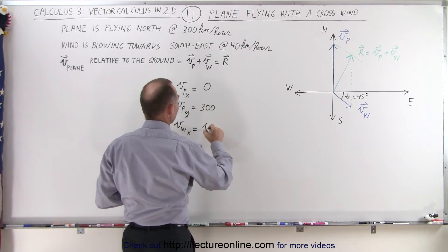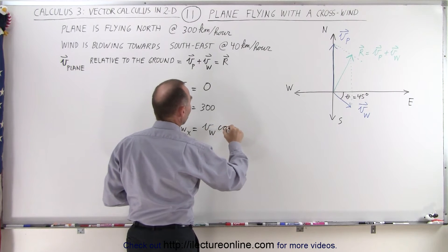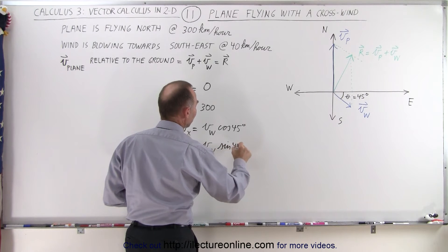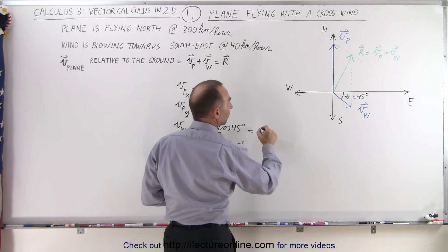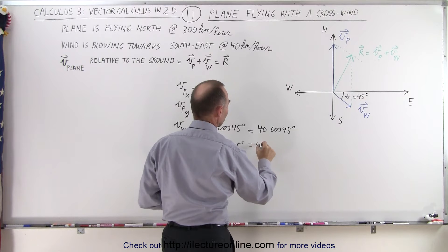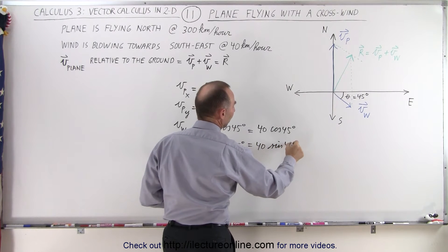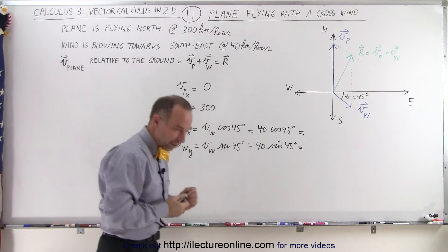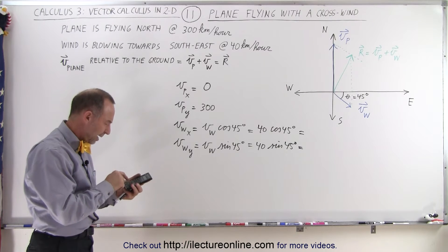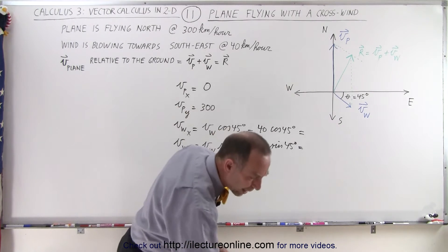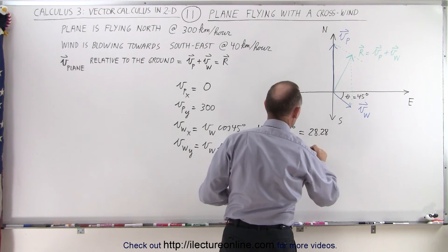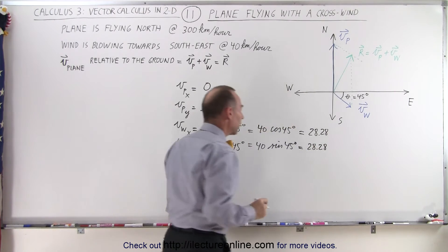For the wind's velocity components, we must account for the 45-degree angle. The x component is v-of-the-wind times cosine of 45 degrees, and the y component is v-of-the-wind times sine of 45 degrees. So this becomes 40 times cosine of 45 degrees and 40 times sine of 45 degrees, which both equal 28.28 kilometers per hour.